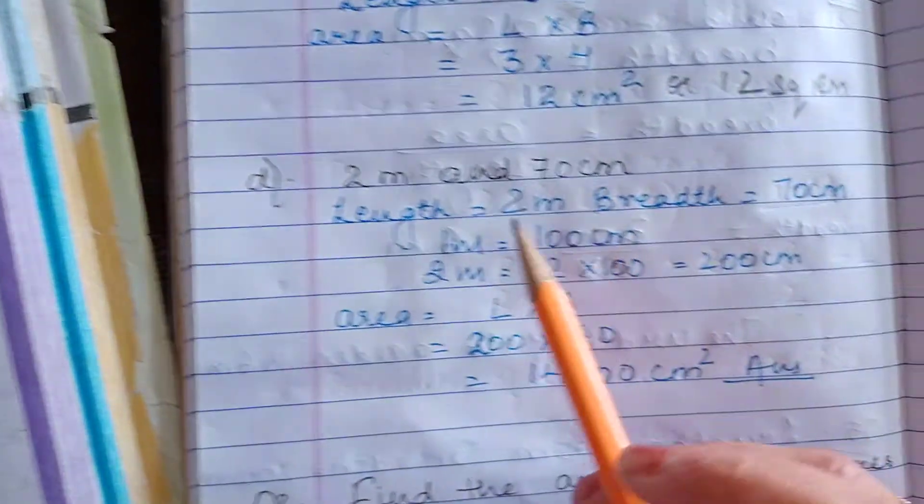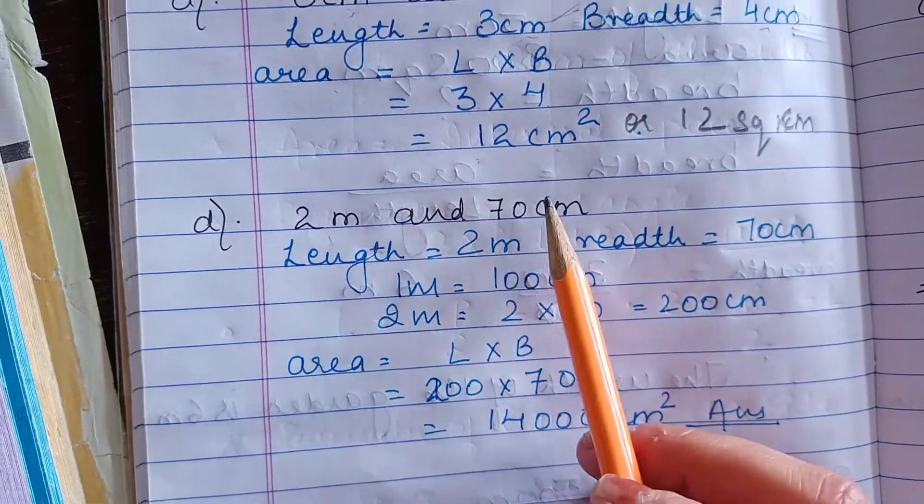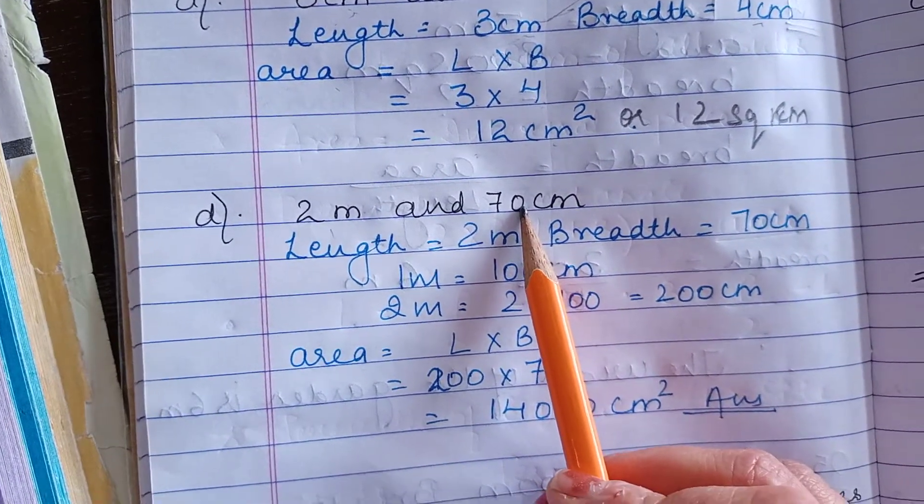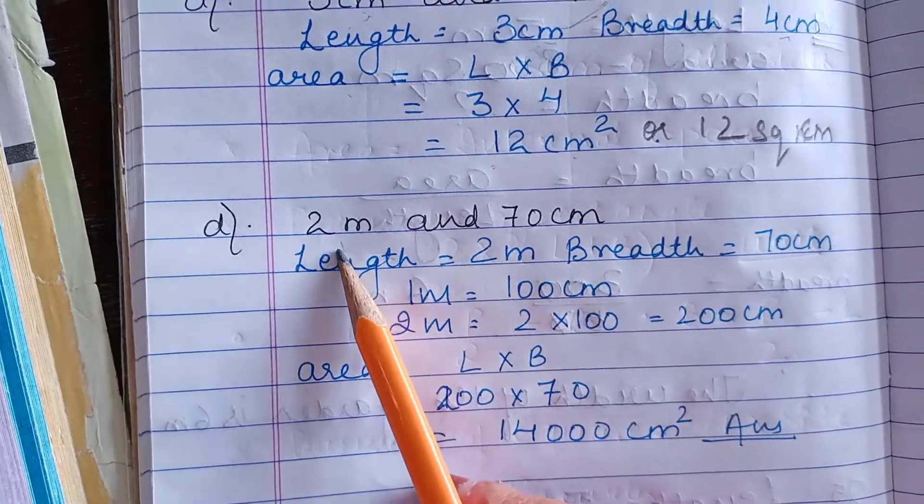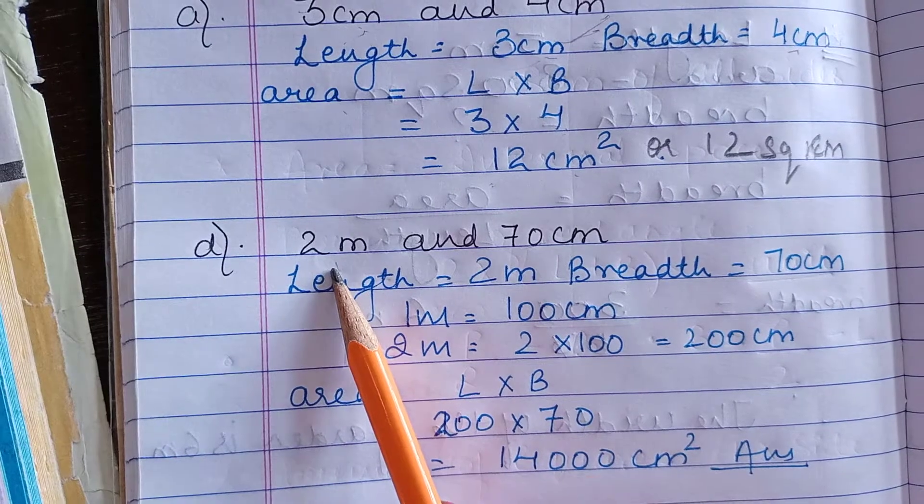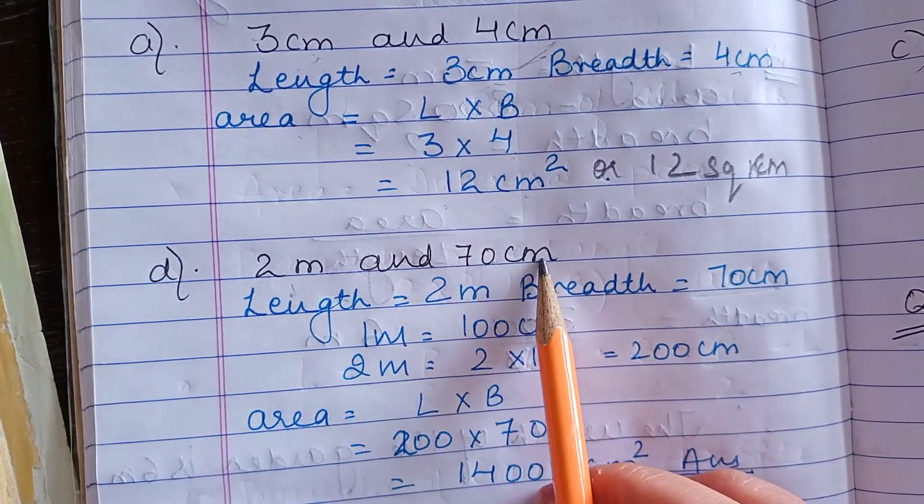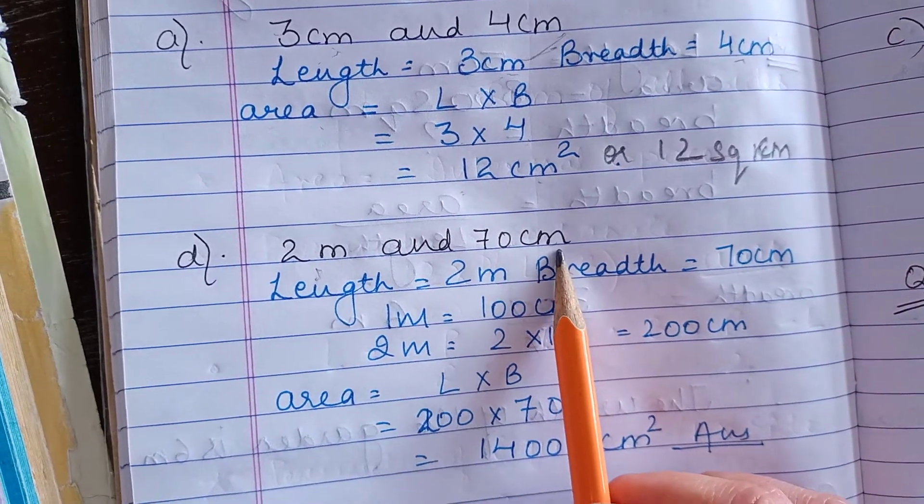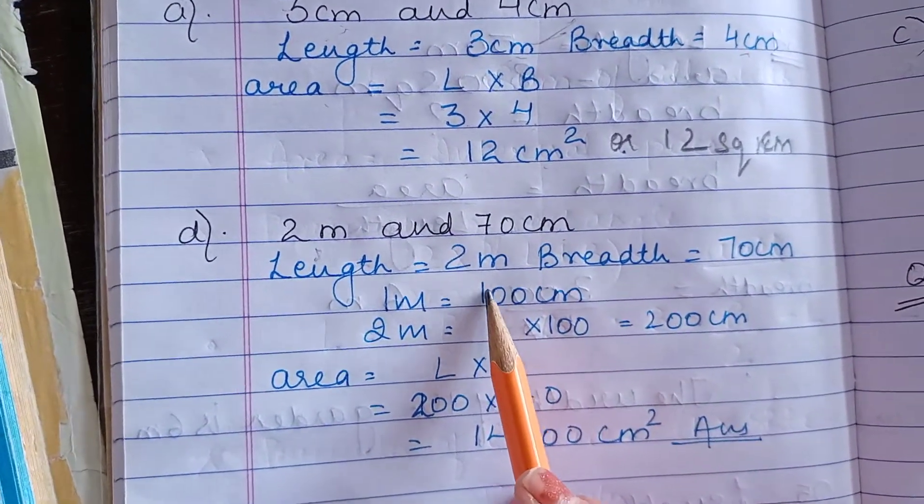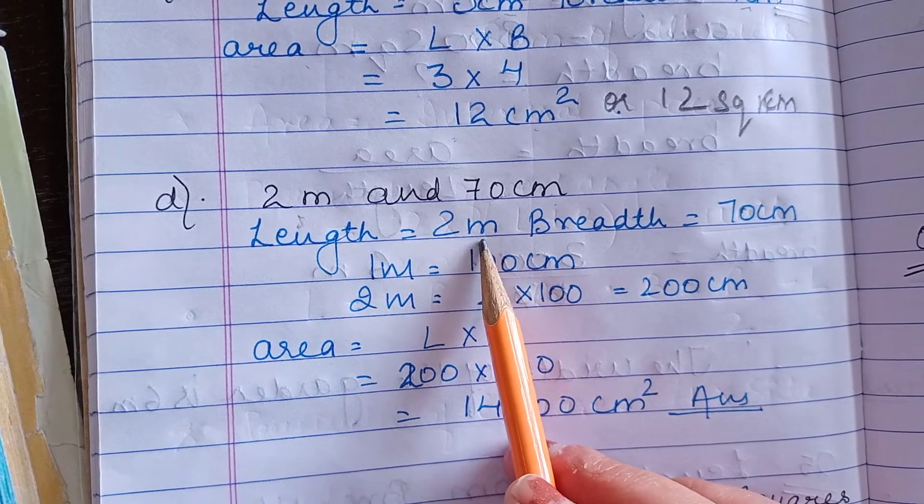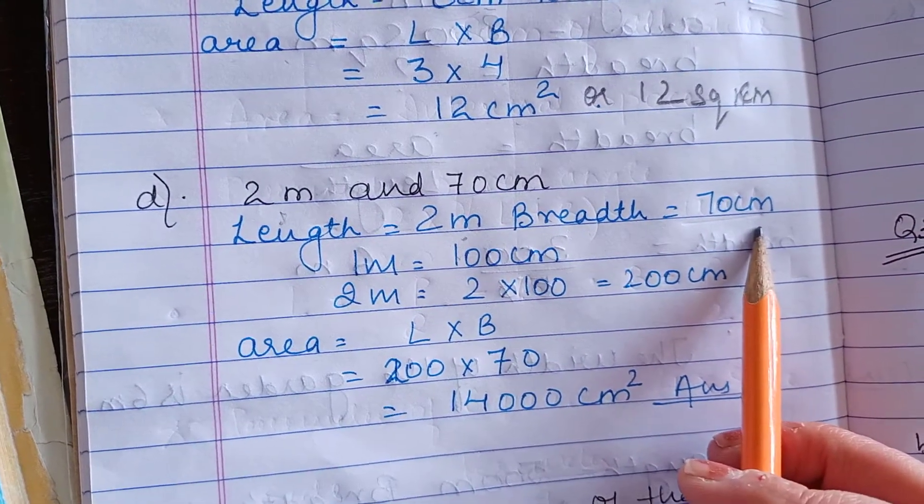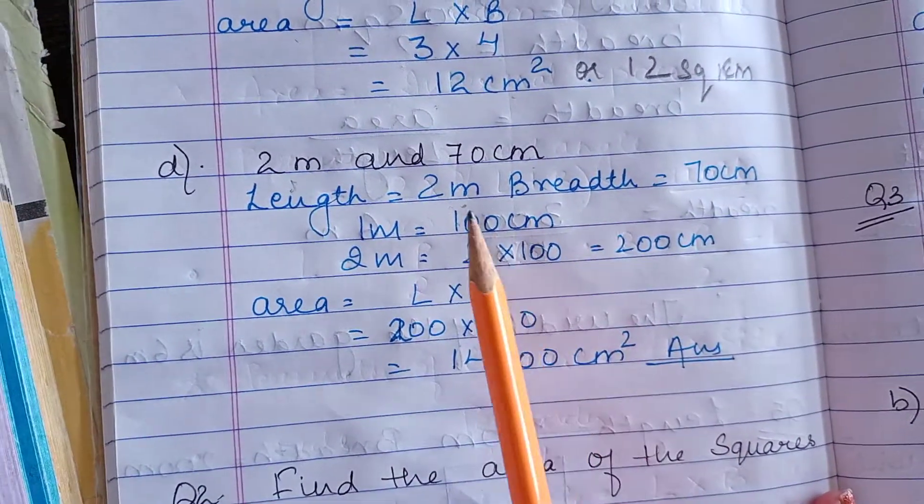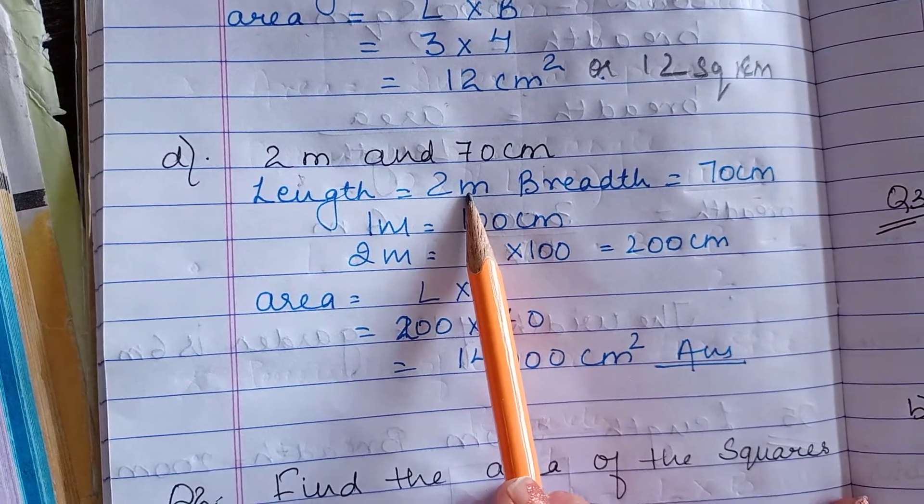Now D part, what is the difference? 2 m and 70 cm is given to us. Whenever dimensions are given to us these units should be same. Here one length is in meter, the other breadth is in cm. So what you have to do is either convert meter into cm or cm into meter. So here I have converted meter into cm.